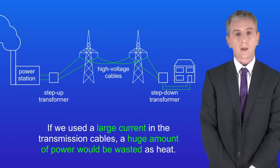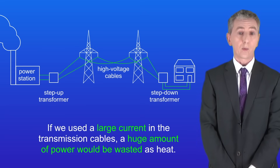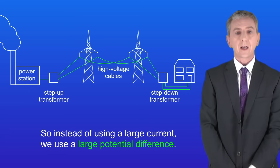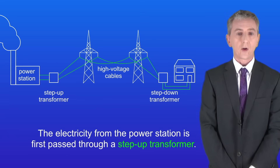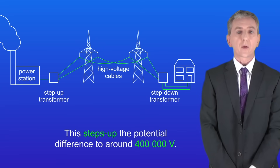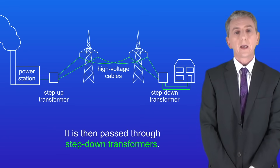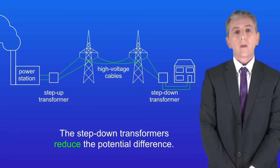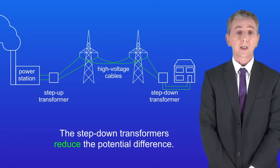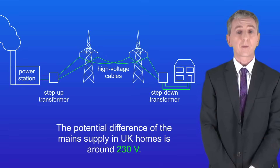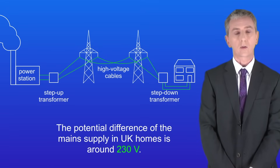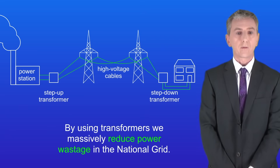If we used a large current in the transmission cables, a huge amount of power would be wasted as heat. So instead of using a large current, we use a large potential difference. The electricity from the power station first passes through a step-up transformer, which steps up the potential difference to around 400,000 volts. It is then transmitted down high voltage cables, and then passed through step-down transformers which reduce the potential difference — for example, to around 230 volts for UK homes. By using transformers, we massively reduce power wastage in the national grid.